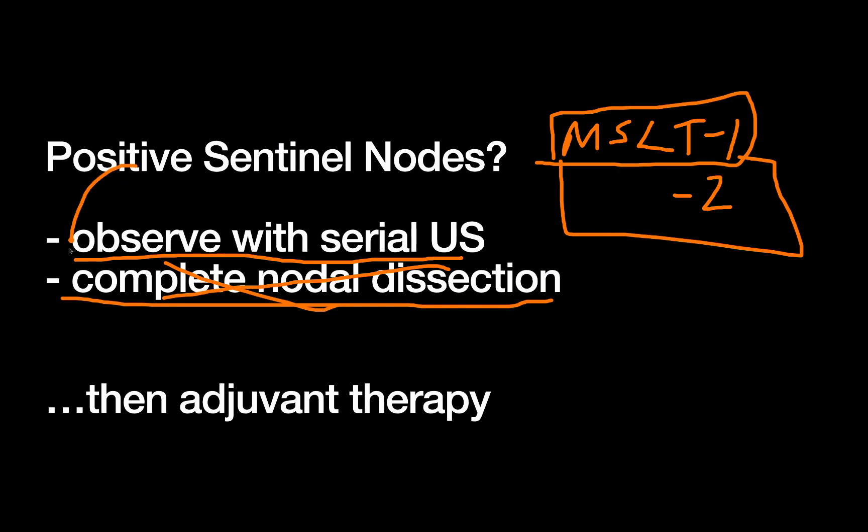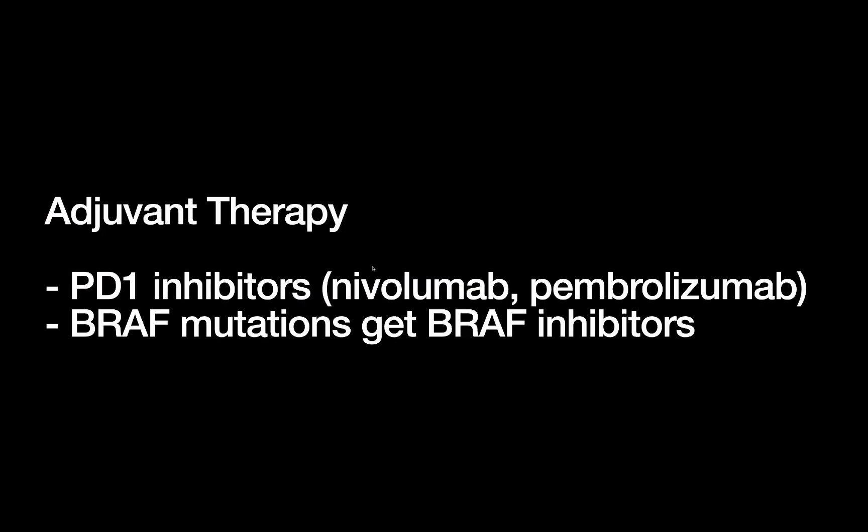And of course anyone with positive nodes is then going to go on to adjuvant therapy. So speaking of, what are our options for adjuvant therapy? We should first define who gets it, and I think the easiest way to think about it is anybody that has a positive lymph node is going to end up getting adjuvant therapy. Of course there's clinical trials and there's options for observations etc., but those are all kind of more medical oncology topics. For surgeons, I think if you just know positive nodes are going to need adjuvant therapy, that's good enough. You have one major first line option and that is your PD-1 inhibitors like nivolumab or pembrolizumab. Also, every tumor gets tested for a BRAF mutation. Those activating mutations can get BRAF inhibitors as well.